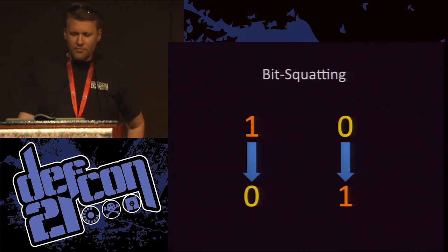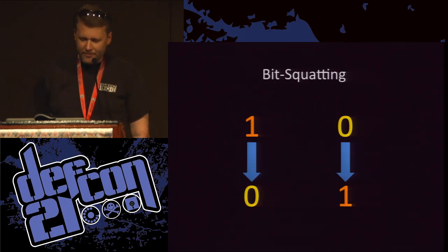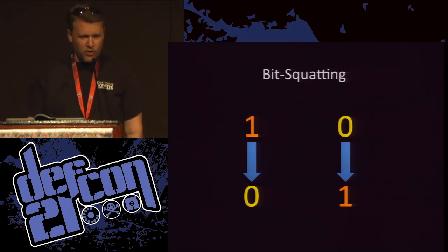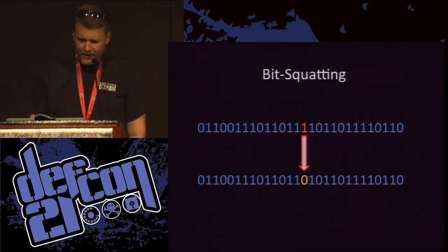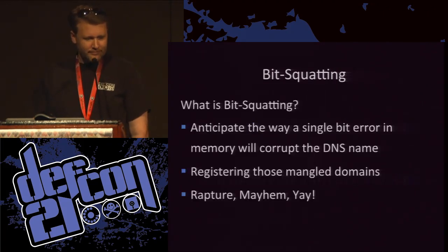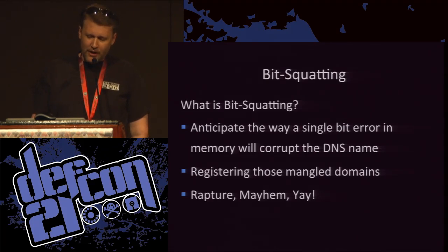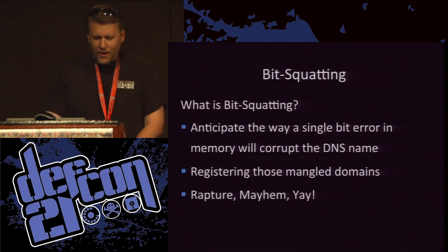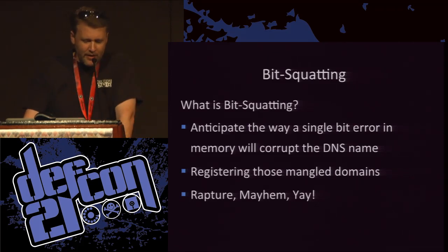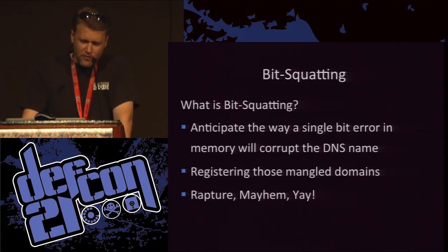Sometimes a single bit in memory will encounter an error that causes it to flip its state. A one will flip to a zero or a zero is flipped to a one and without ECC memory, this will be uncorrected. Every once in a while that bit will get flipped in the middle of interesting strings of data. Artem explored the phenomenon where single bit errors in the right part of memory, at just the right moment, would cause a client to query a completely legal, valid, and yet incorrect name. I continued where he left off, exploring all the ways I could abuse this for malicious purposes.